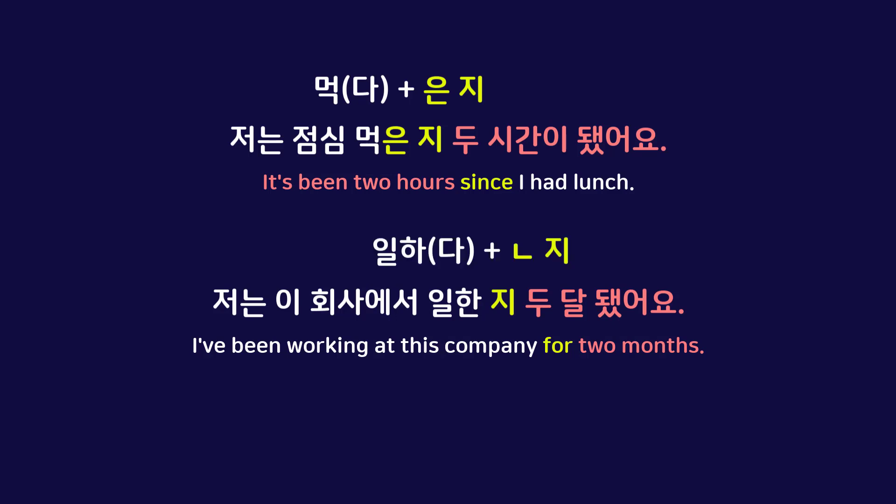However, if a verb stem doesn't end in 받침, we add ㄴ지 to the verb stem. So 일하다 doesn't end in 받침, so it becomes 일한지. Just like many other structures added to verbs, there are also irregular patterns to adding 은지. We've created a table listing all these irregular patterns — you can access it by clicking the link in the description below.